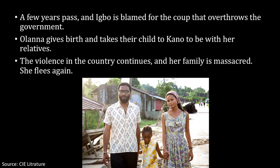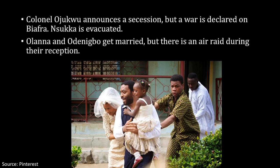A few years pass and the Igbos are blamed for the coup that overthrows the Nigerian government. Olanna gives birth and takes their child to Kainene to be with her relatives, and the violence in Nigeria continues and her family is massacred, so she flees again. Colonel Ojukwu announces a secession to create the state of Biafra, but war is declared on Biafra and Nsukka — the city itself — is evacuated.